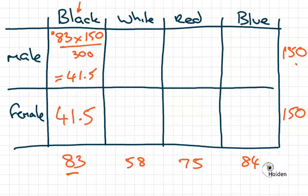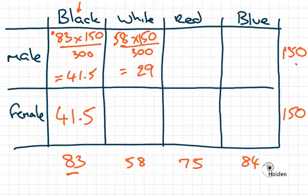For males choosing white, what would we expect? We would expect 58 times 150 divided by 300 of these people to be choosing that. That comes out as 29. Again, female numbers, same as males, 29. That's in this case because we've got the same number of males and females.